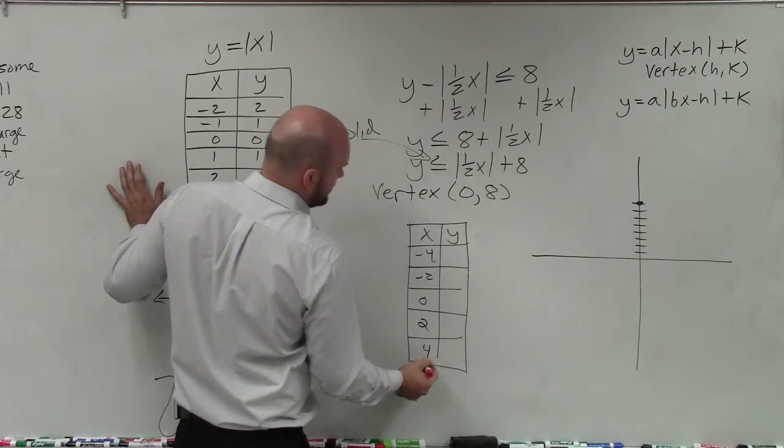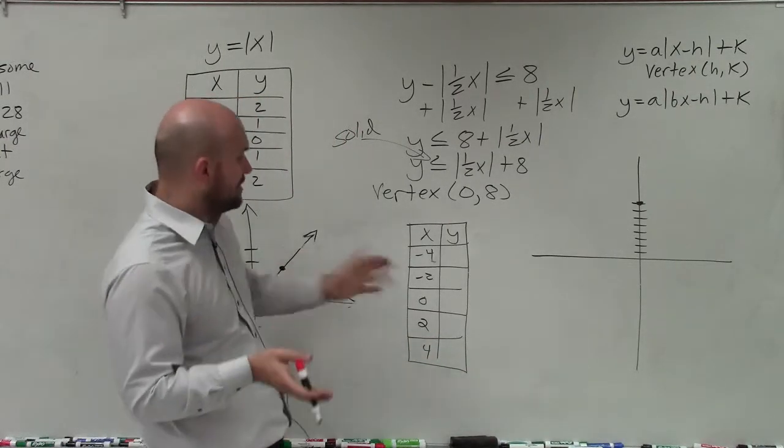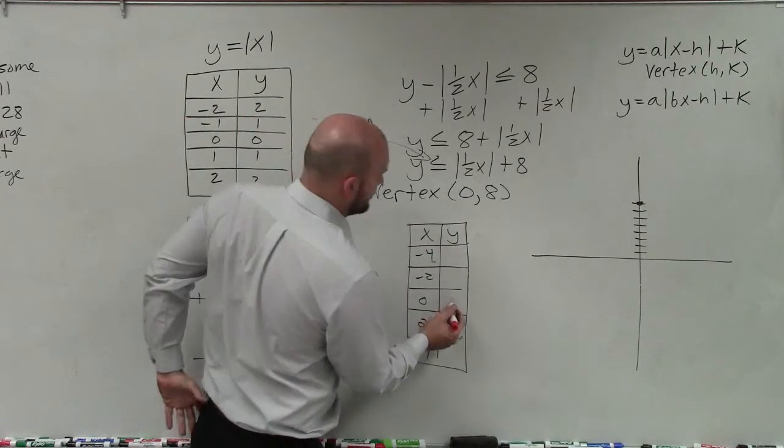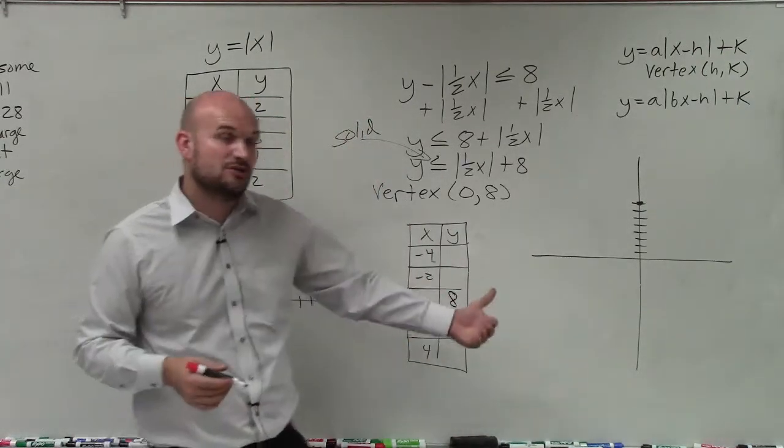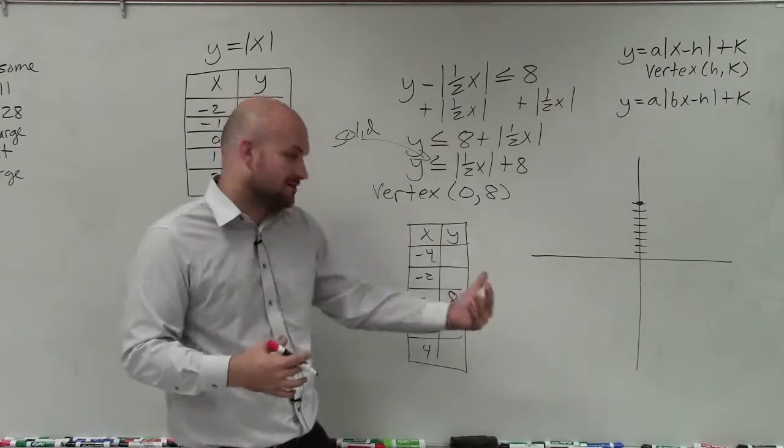So I'm going to choose negative 4, negative 2, 0, 2, and 4. Now, again, we already know what 0 is. When our x value is 0, we know the y value is 8. So if I can just pick two points to the left or two points to the right, I can just reflect them over.